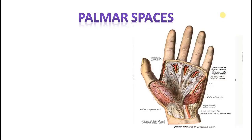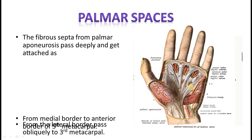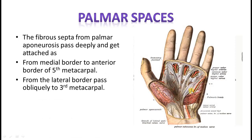Coming to the palmar spaces, first you see the palmar aponeurosis — you know it is a flattened tendon, the most superficial structure, present deep to the superficial fascia. It divides into four slips. If you look from the medial or ulnar border and from the radial or lateral border, it sends septa deep to get attached to the metacarpal bones, thereby dividing the space in the hollow of the palm. From the medial border it attaches to the fifth metacarpal, and from the lateral border it attaches to the third metacarpal. That way you have the central palmar space or mid-palmar space.